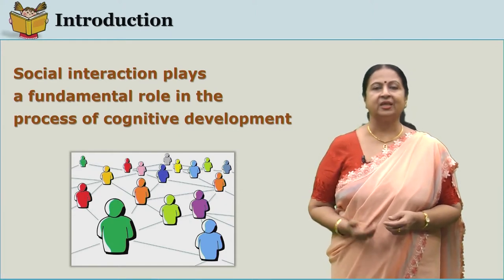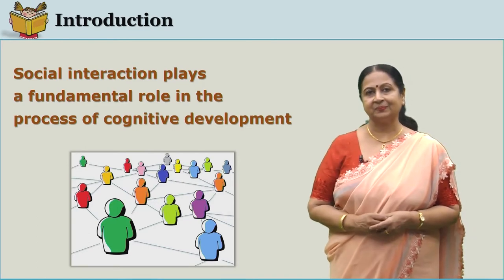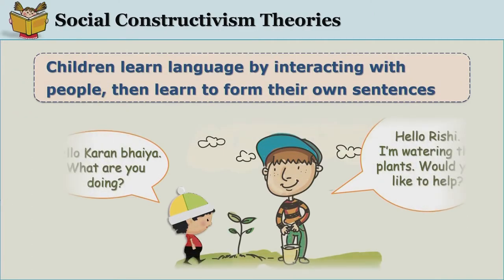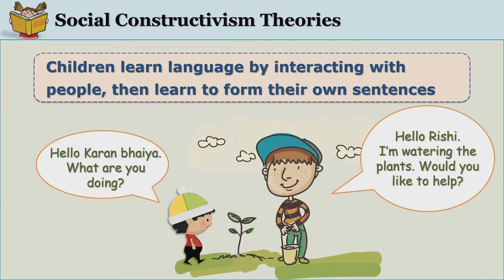This idea about learning was put forward by Lev Vygotsky, who said that social interaction plays a very important role in the process of cognitive development. Vygotsky, the propounder of this theory, realized that children learn language first by observing others speak that language and by imitating the sounds made by them.